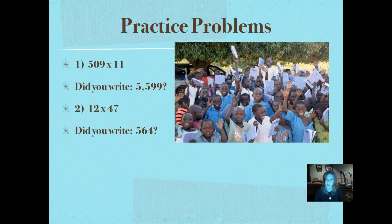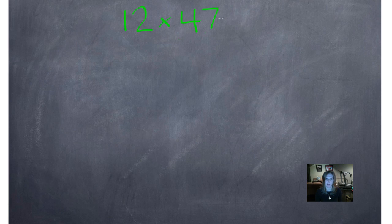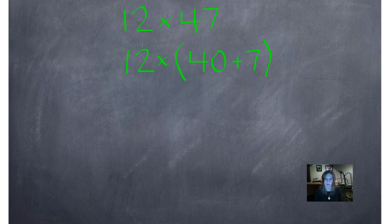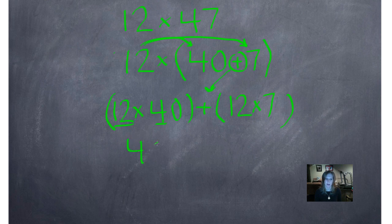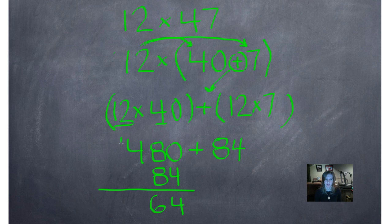Did you write 564? Let's see how we did that one. If I want to use my easiest mental math, I'm going to break apart that 47. I'll rewrite 12 times, put my parentheses, 40 plus 7 — written in expanded form. Now I'm going to rewrite 12 times 40 and 12 times 7, with our parentheses leaving a space in the middle for the operation, and our addition symbol between the two. 12 times 4 is 48, bring down our zero — 480. And then 12 times 7 is 84. Adding those up: 0 plus 4 is 4, 8 plus 8 is 16, and 4 plus 1 is 5 — that's 564.